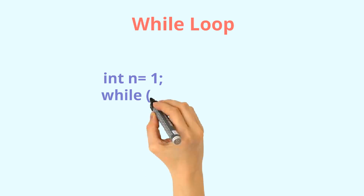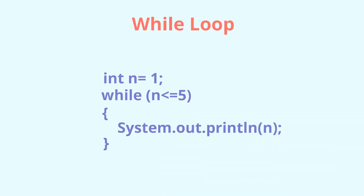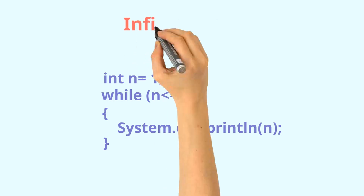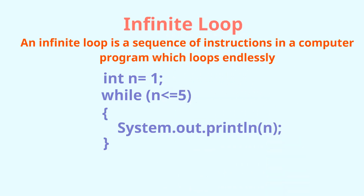You could have a situation where in a while loop you never reach the terminating condition due to some logical error. In that case, the while loop keeps on executing. Such a loop is called an infinite loop. For example, if you have not written any increment statement, or you unintentionally overwrote the increment value, the loop runs forever.